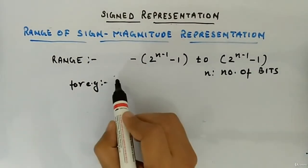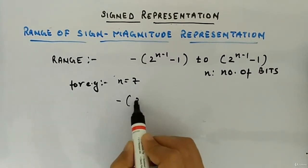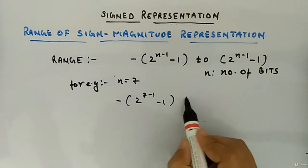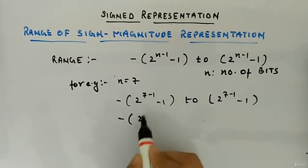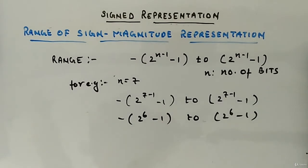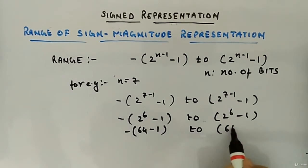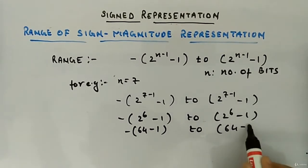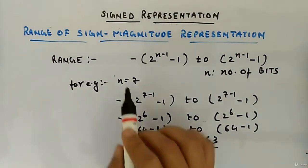Let's take another example. If n equals 7, then the range will be minus 2 to the power 7 minus 1, minus 1, to plus 2 to the power 7 minus 1, minus 1. This simplifies to 2 to the power 6 minus 1, to 2 to the power 6 minus 1. What is 2 to the power 6? It is 64. So 64 minus 1 equals 63. This means the range is minus 63 to plus 63.